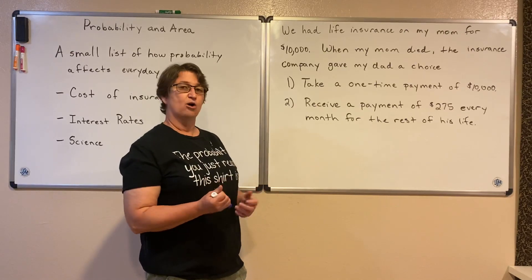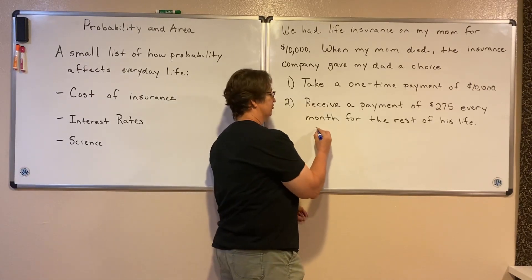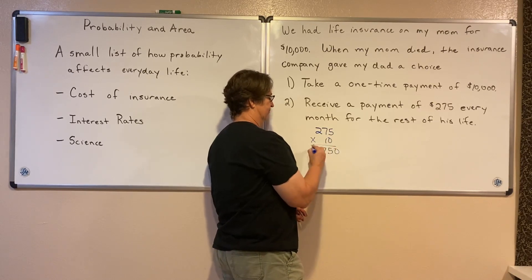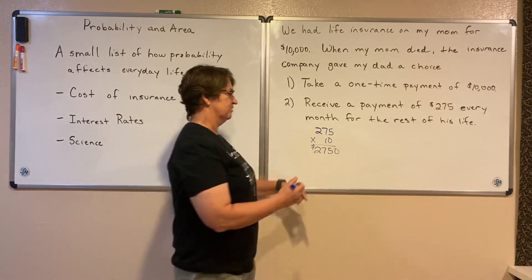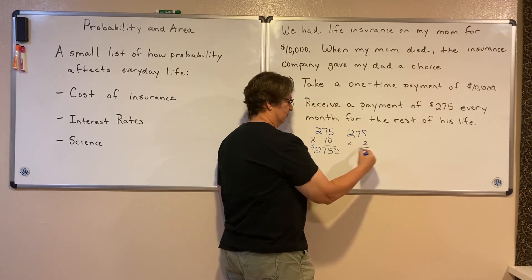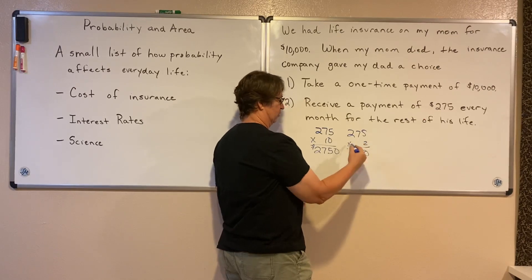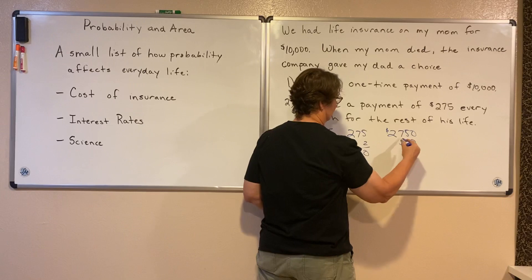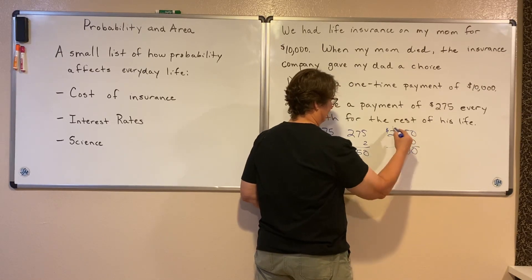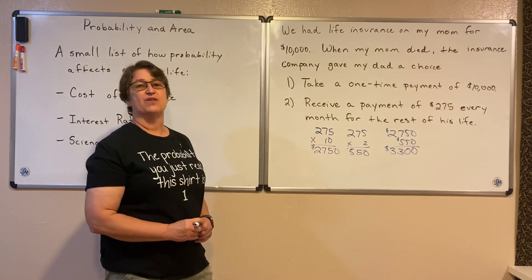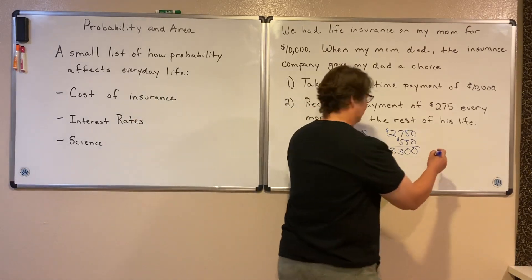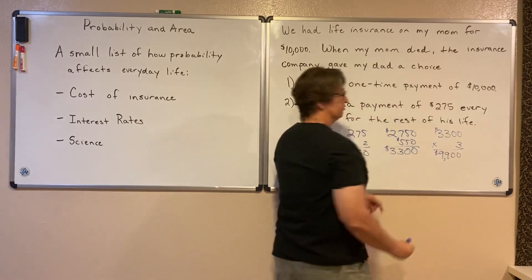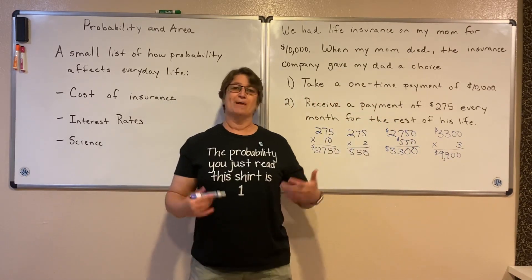We looked at how long it would take him to make $10,000. If we did $275 a month for 10 months, he would make $2,750. To make it to a full year, we need two more months — two more months gives $550, so $275 for 10 months plus $550 for two months gives one full year at $3,300. So if you do that for three years, after three years he would have $9,900. That means after three years and a month, my dad would start making more than that $10,000.